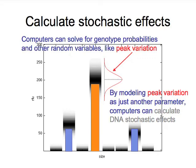In addition to determining where events are based on data, statistical computing can also determine the certainty of where these events might be. In other words, the computer can calculate stochastic effects. Computers can solve for genotype probabilities, as we just saw, or mixture weights and other random variables, but peak variation is just another parameter. It's just another random variable. So by modeling the peak variation, computers can calculate the DNA stochastic effects. In fact, it can be done, and it is done, by modern computing, customized to every peak at every locus that appears in the data.